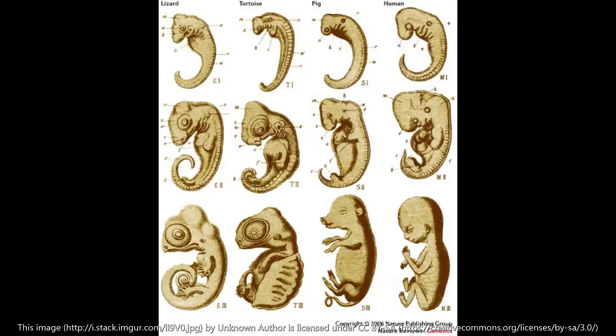Scientists study the early stages of embryos and they can see the differences between each stage, seeing how these embryos are evolving into species. They can trace back to where they look similar and when the differences started occurring, which shows us we have a common ancestor.